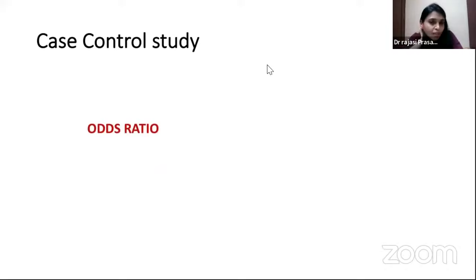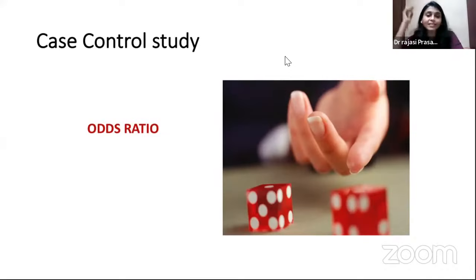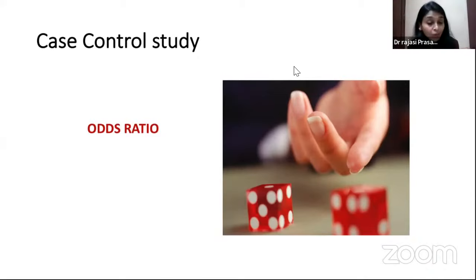In case control, the risk measure is odds ratio. In the 2x2 table, odds ratio is a cross product ratio — it's calculated as A×D divided by B×C. Using the CD rule, along the column you mark disease and along the row you mark exposure: present or absent.